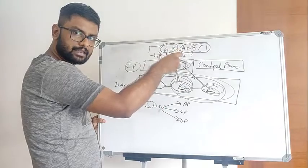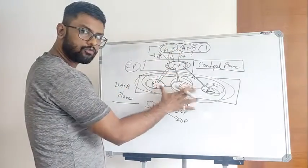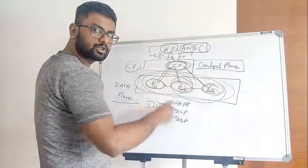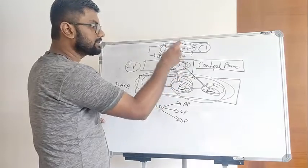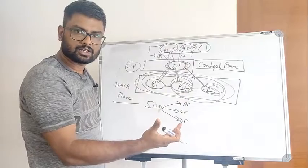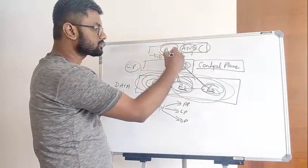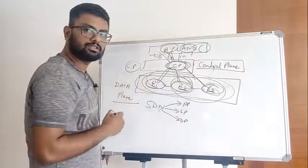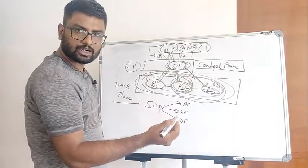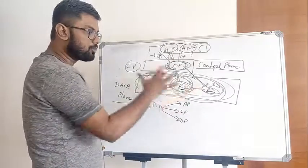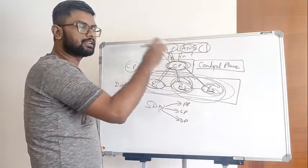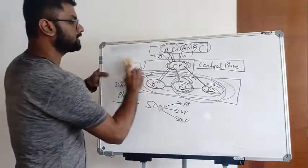The control plane has the brain — it controls the routing decisions for all routers and devices under instruction from the application plane. The application plane handles functions like load balancing or traffic re-engineering and sends instructions to the control plane. For example: you want communication between two routers defined — we can do that. You want two routers to work together — we can do that, because the control plane manages all devices and the routers follow its instructions.